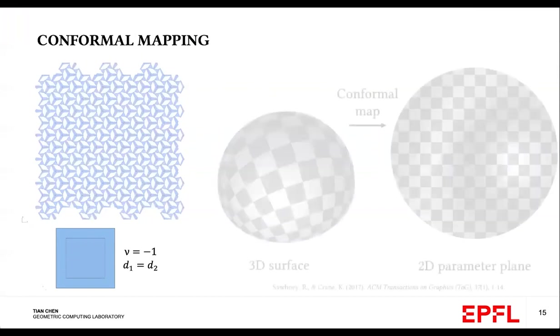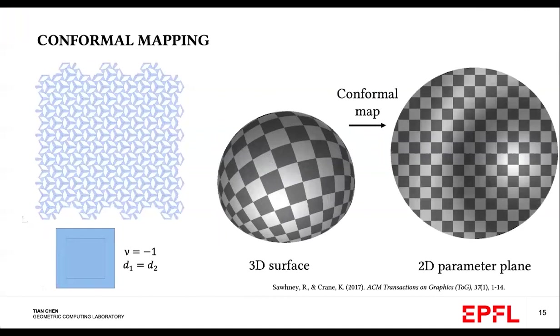And this kind of behavior, if we abstract to the continuous world, can be captured by conformal deformation. So in order to get non-zero Gaussian curvature, we need a variation expansion factor. In this case, the expansion factor is defined as the length change between the 3D surface and the 2D parameter plane.